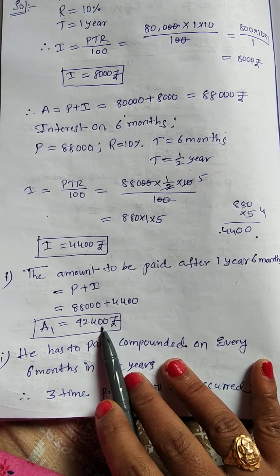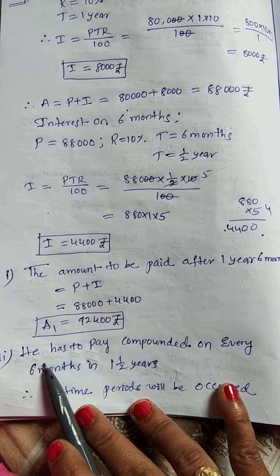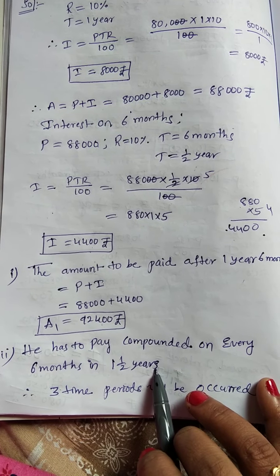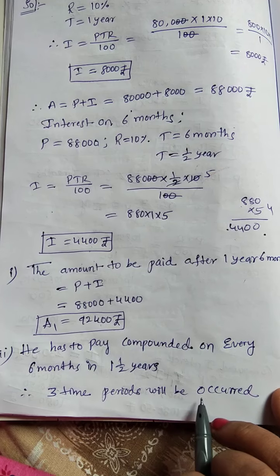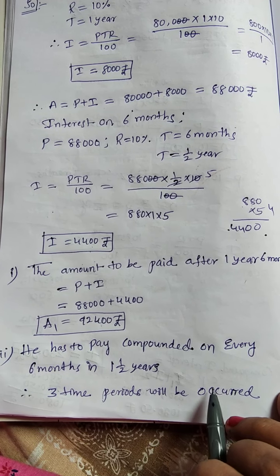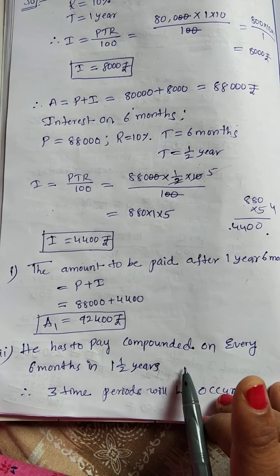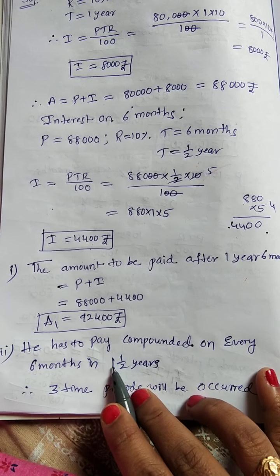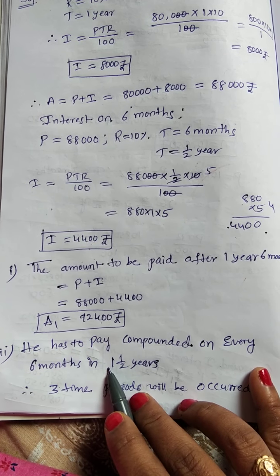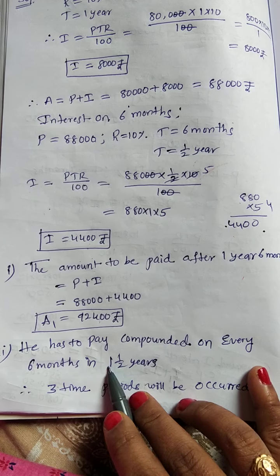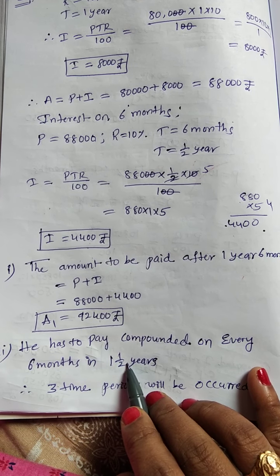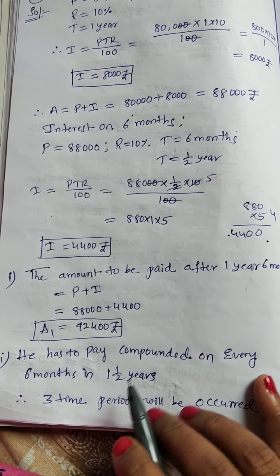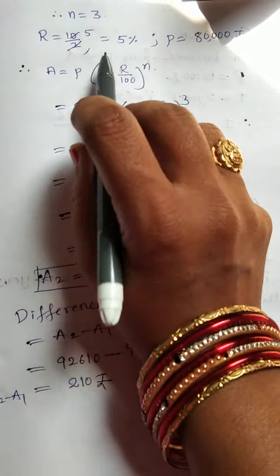Now for compounding every six months: in one and a half years, how many six-month periods are there? For one year there are two six-month periods, plus one more for the extra half year — so there are three time periods total. Therefore n = 3.